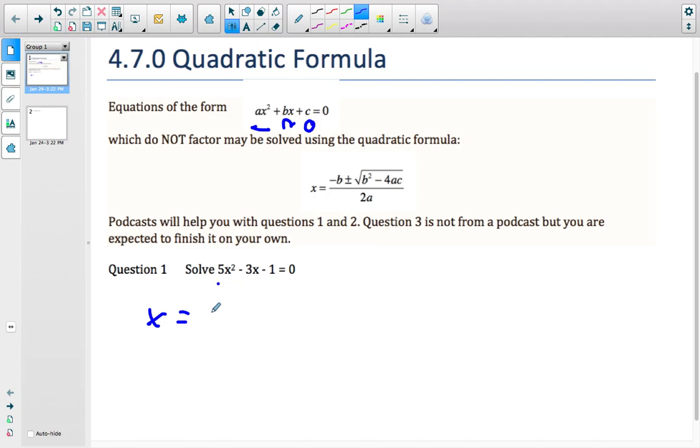So a, in this equation, is equal to 5. I'm going to write that down here so I don't forget that. a equals 5, b equals negative 3. So it's important to remember that sign there, isn't it? And c is negative 1. So this works because we're already rearranged into standard form equal to 0.